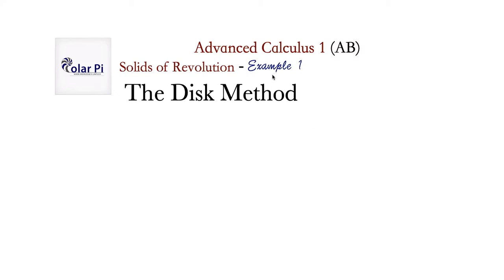Hey guys, welcome. Happy 2020! If you haven't watched example zero on solids of revolution, you should first watch that before watching this, because in example zero we take a big-picture look at the disk method, the washer method, and the method of cylindrical shells — we turn all three of them inside out and upside down to really make sure we understand them. Watching example zero prior to this will facilitate easier understanding of the discussion in the rest of this video.